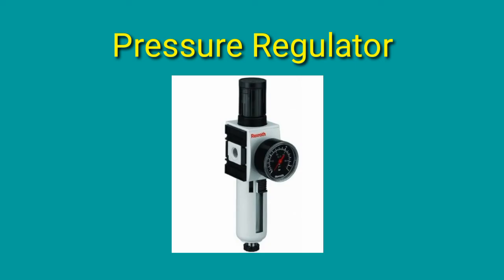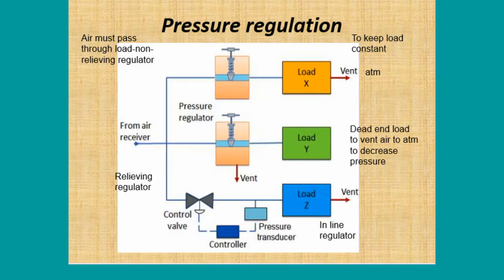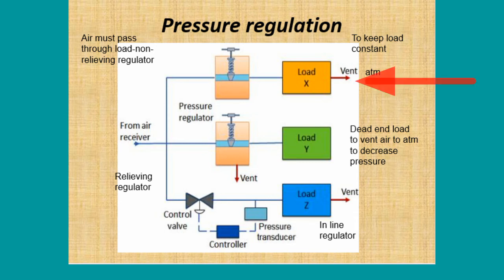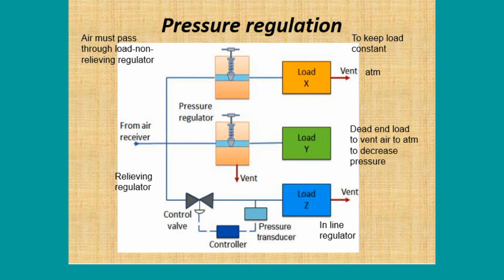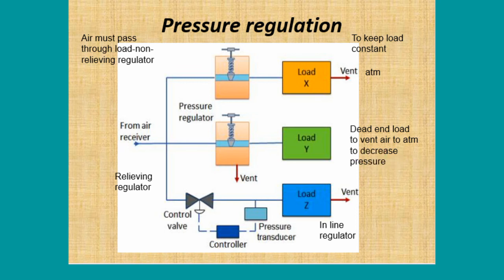The pressure regulator, or air regulator, is one of the most important parts of a pneumatic system. In the first type, the load continuously vents air to the atmosphere, and the pressure regulator restricts air flow to the load to control pressure. Some minimum flow is required to operate this regulator. If the load is a dead-end type that draws no air, pressure in the receiver rises to manifold pressure — this is called a non-relieving regulator. In the second type, the load is a dead-end but the regulator itself vents air to atmosphere to reduce pressure — this is called a relieving regulator.